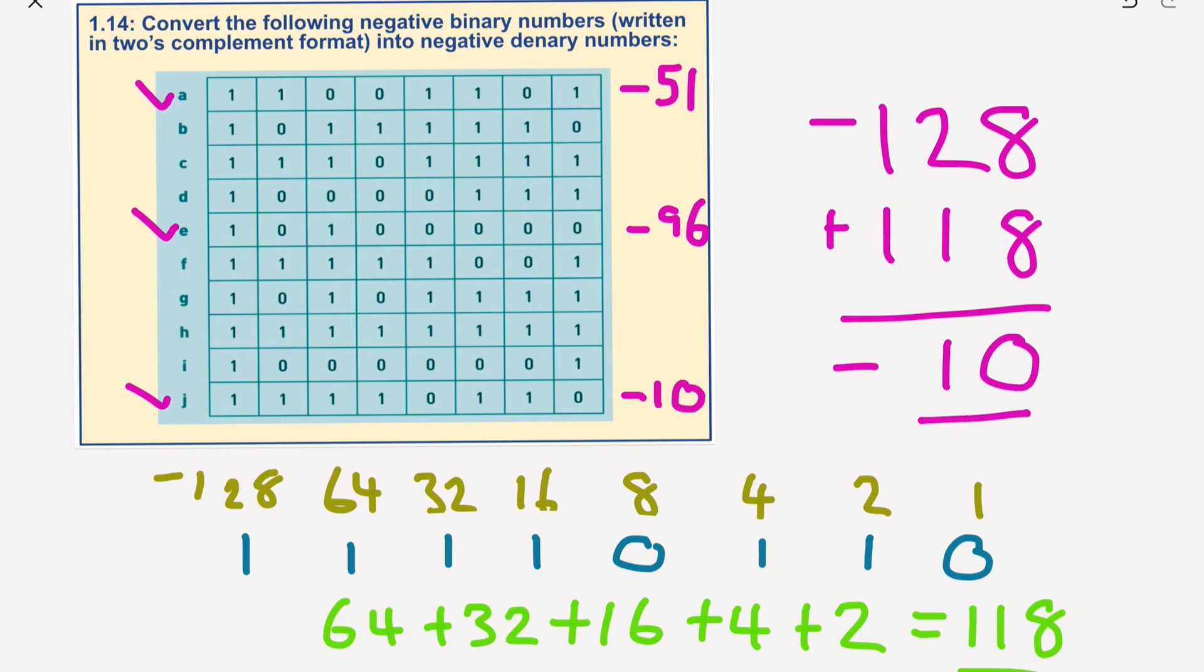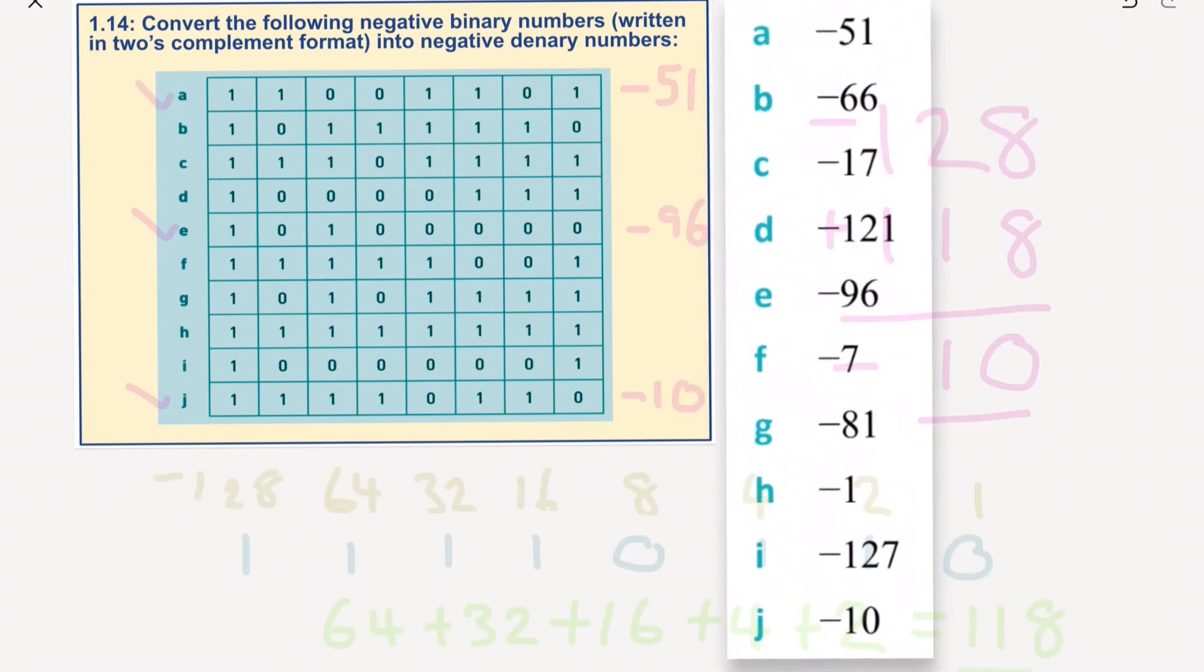Let's bring in the answers and see if we've done this correctly. And as you can see there, so minus 51, minus 96, minus 10 were the ones we had, but we've got minus 66 for B, minus 17, minus 121, minus 96, minus 7, minus 81, minus 1, minus 127, and minus 10.